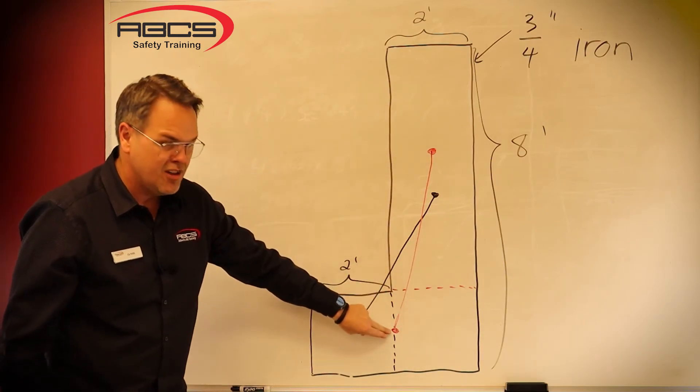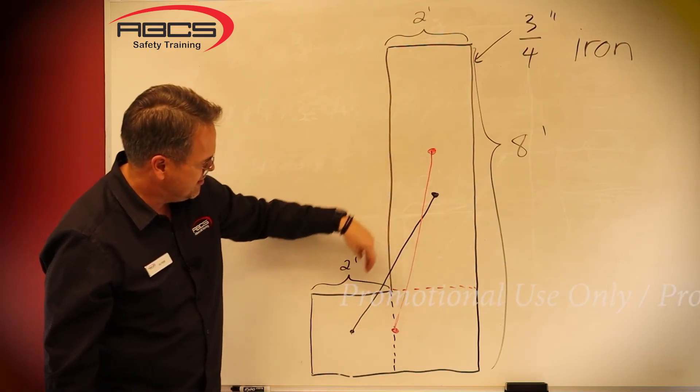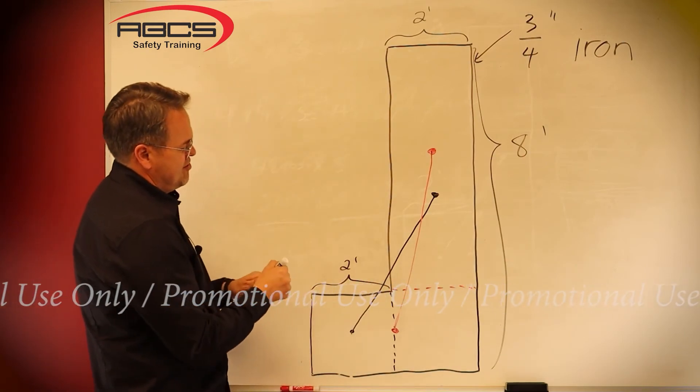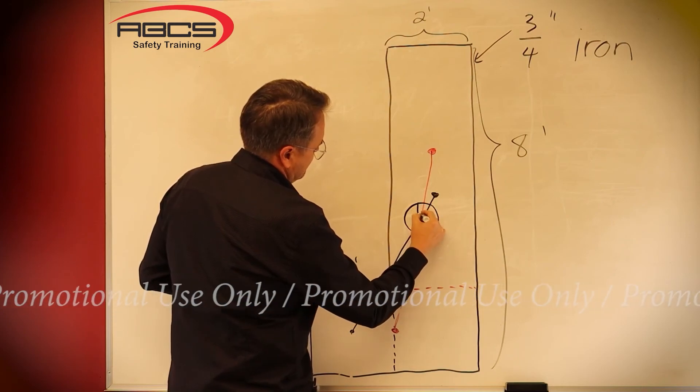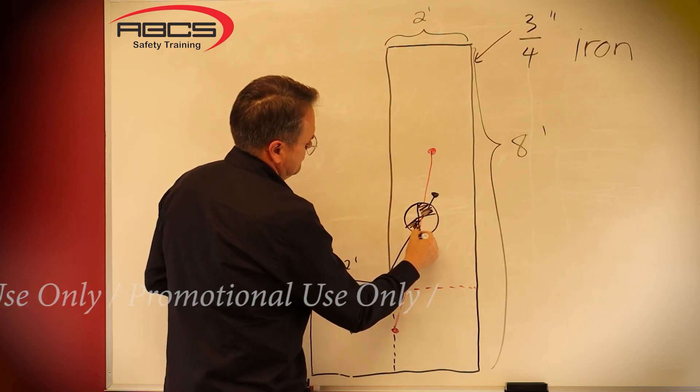The center of gravity is going to be somewhere along that line. Well, if it's somewhere along this line, and it's somewhere along this line, it has to be where the two lines intersect. That is your center of gravity. Easy.